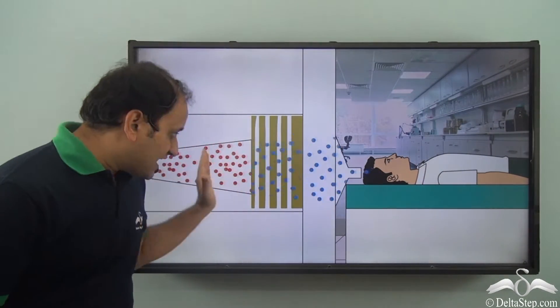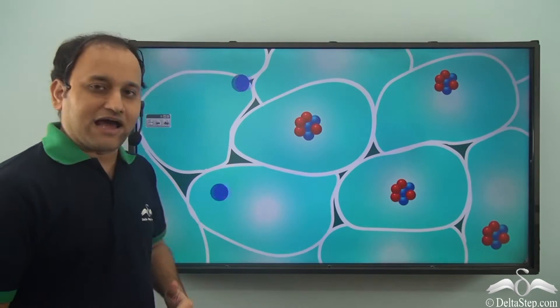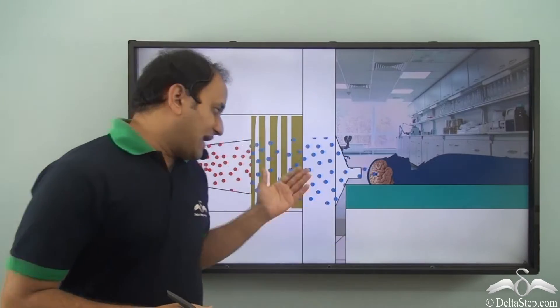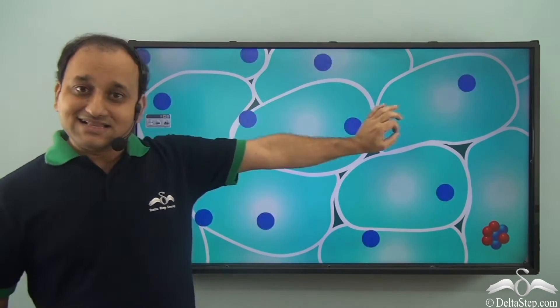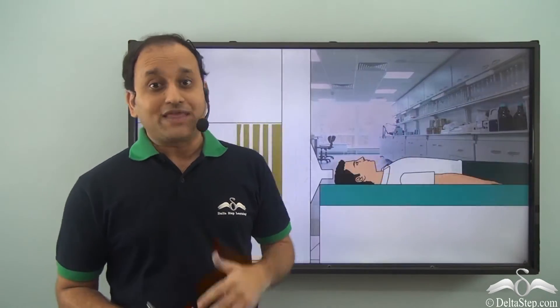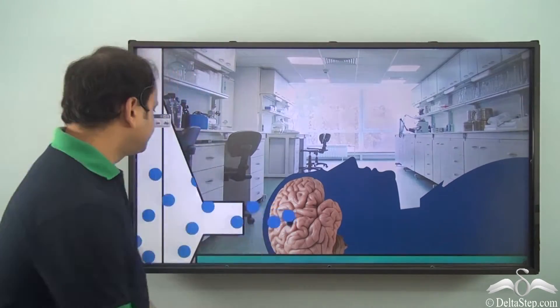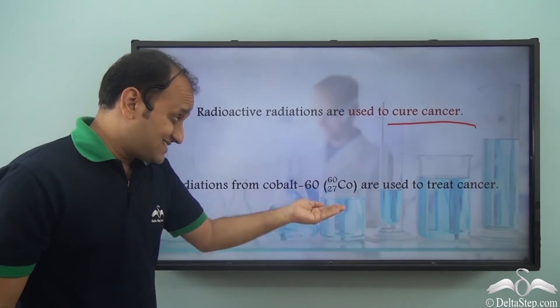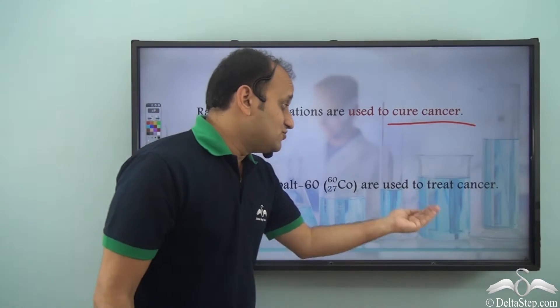Specialized equipment allows radioactive radiation to go inside our body in a very controlled environment, so that only the cells affected by a certain disease are exposed to the radiation while other cells are left unexposed. The radiation damages only the cancerous cells while leaving other cells undisturbed. Cobalt-60 is one of the radioactive elements used to treat cancer.